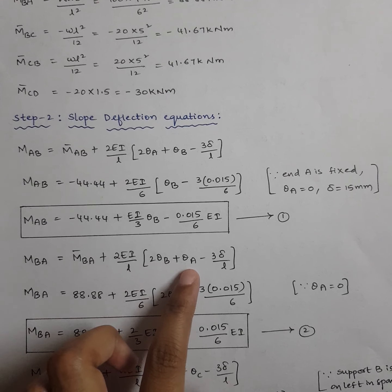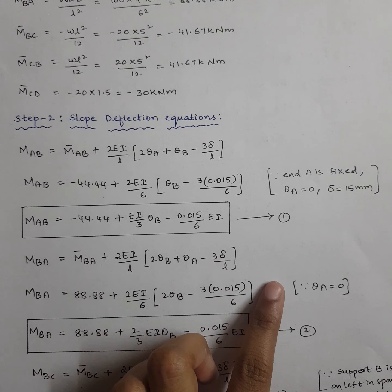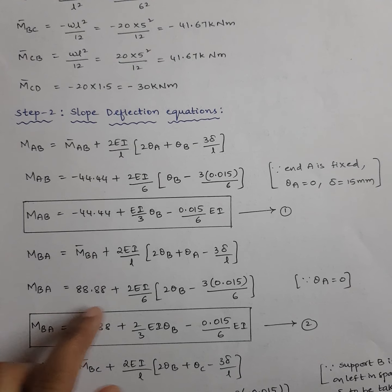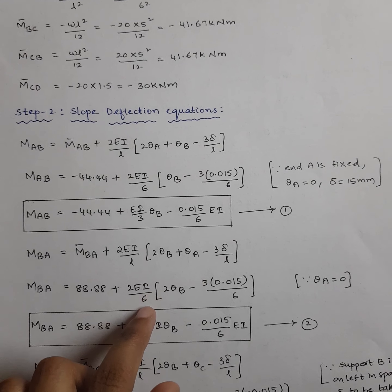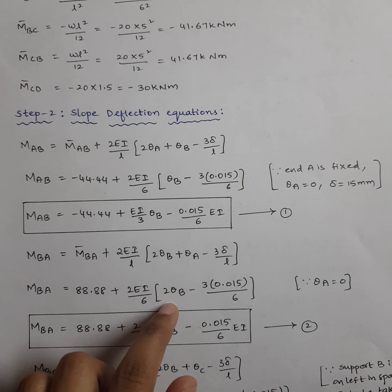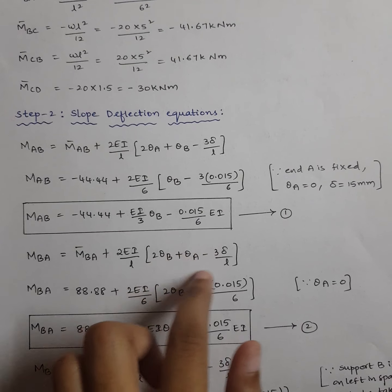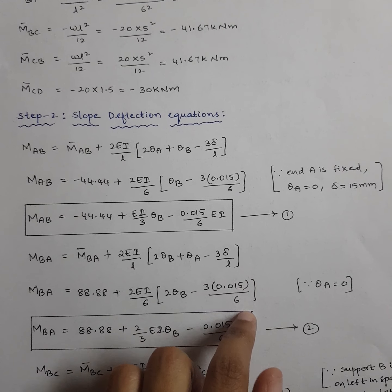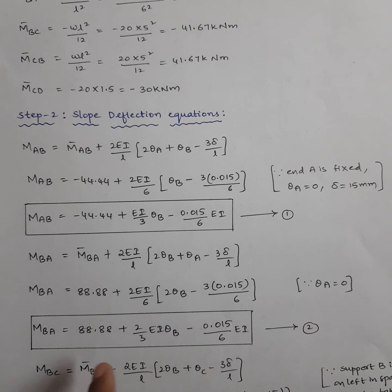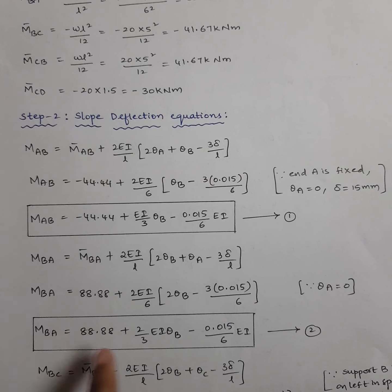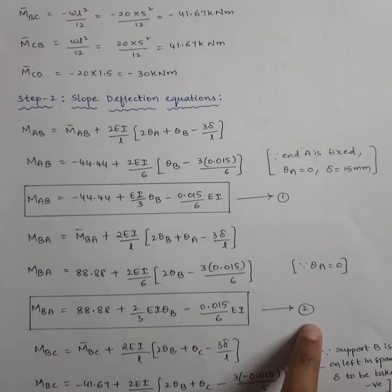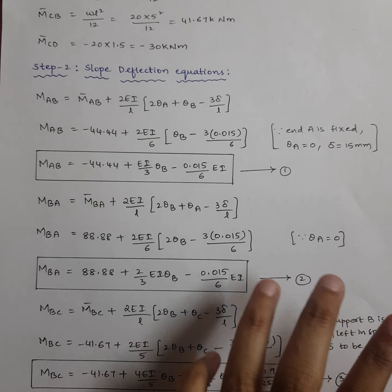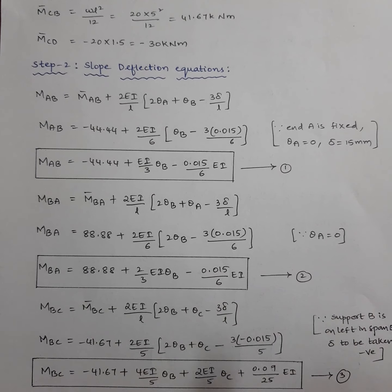For M_BA: M̄BA + (2EI/6)(2θB + θA − 3Δ/L). M̄BA = 88.88, θA = 0, and delta = +0.015 (B is on the right side of AB). So M_BA equals: 88.88 + (2EI/6)(2θB − 3 × 0.015/6). This gives equation 2.